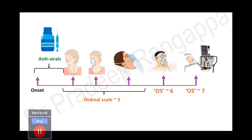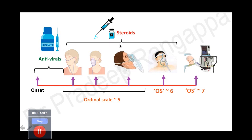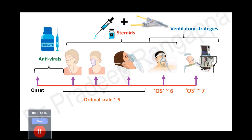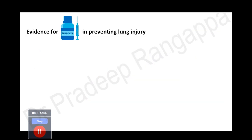From onset to needing oxygen, the predominant intervention to help prevent lung injury is remdesivir. Once patients go on oxygen, the important intervention shown to prevent further progression is steroids. Along with steroids, we have understood that the pathophysiology of COVID involves hypoxia with lung injury and microthrombic formation, so anticoagulation or venous thromboembolic prophylaxis is important. Once patients go on NIV or ventilator, you must adopt ventilatory strategies to prevent further perpetuation of lung injury.